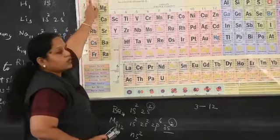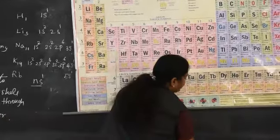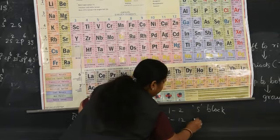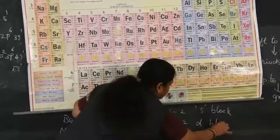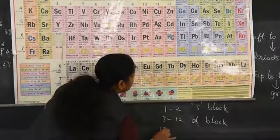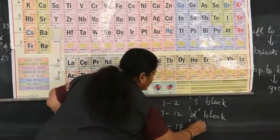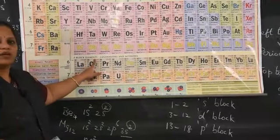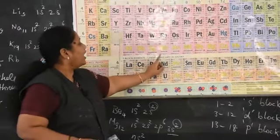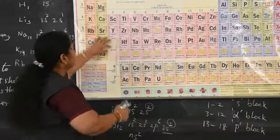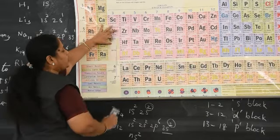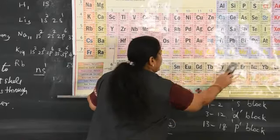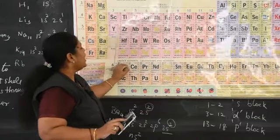Group 1 and 2 are called S block elements. Groups 3 to 12 are D block elements. The elements belonging to groups 13 to 18 are called P block elements. F block elements are called lanthanoids and actinoids. When you write the electronic configuration, these 14 elements end with an F orbital — that is why they are called F block elements.